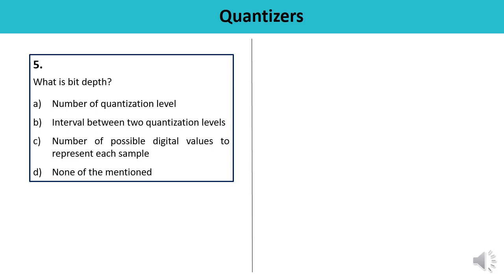Question 5: What is bit depth? You must remember that one of the very important properties of a PCM signal, which determines its streamability, is bit depth — which is the number of possible digital values that can be used to represent each sample. The correct answer is C.